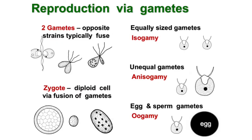Chlamydomonas sexually reproduces through the involvement of two gametes. In isogamy, both of the gametes that are produced are similar in shape, size, and structure — they are morphologically similar but physiologically different. Isogamy is the most common mode of sexual reproduction in chlamydomonas.